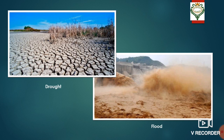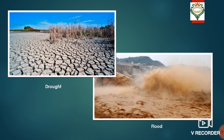Thousands of people died in the flood and those who could survive returned to the devastated fields. So, absence of water is a problem, and presence of excess water is also a problem. The people who settled on the banks of the Wangho River suffered from both of these problems. They built earth dams and dug canals with great determination.